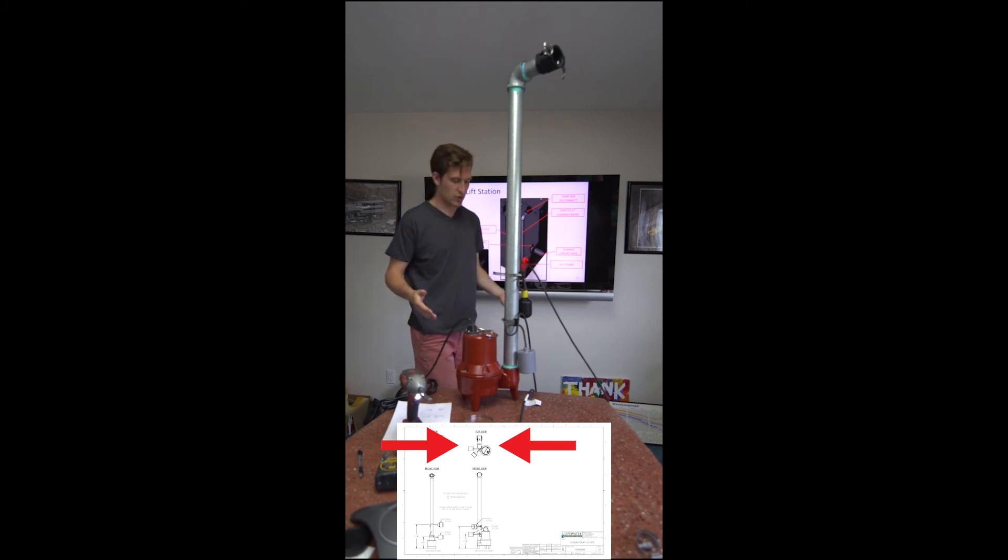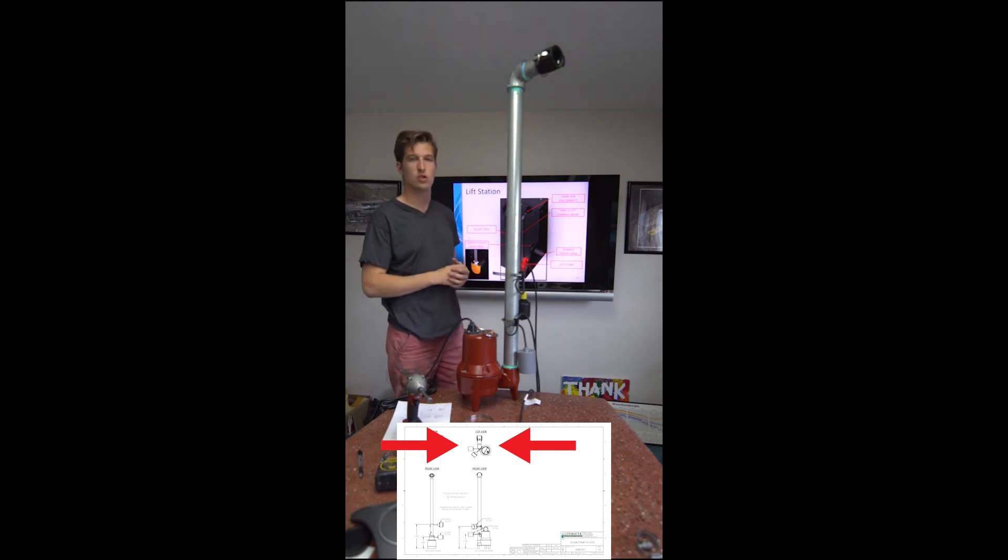Now that everything is in the right orientation you can just run these wires up here. You may want to use a pipe clamp up here to hold them on to the pipe as well. And then this can be dropped back into the lift station compartment. Make sure that the cam fitting at the top here is closed all the way. And your old float tree can be discarded.